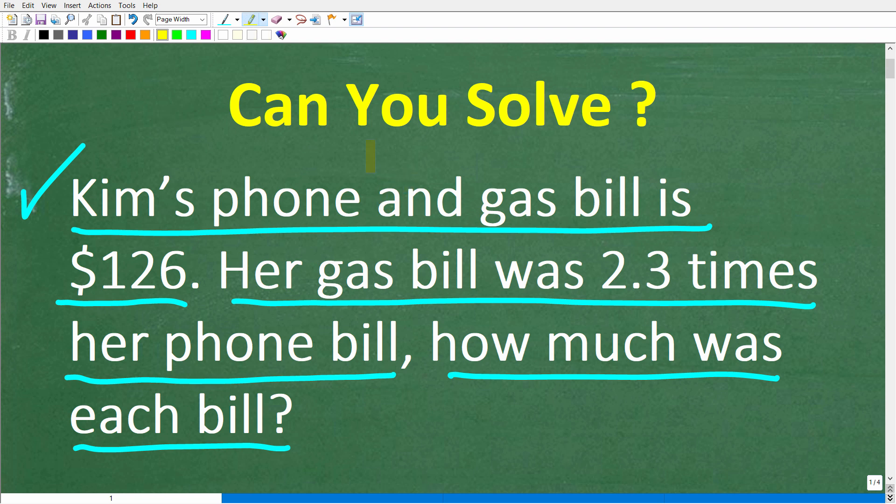Alright, now before I show you the answer, let's take one more look at the problem. So Kim's phone and gas bill in total is $126. Her gas bill was 2.3 times her phone bill. So how much was each individual bill? Alright, so let's take a look at the answer.